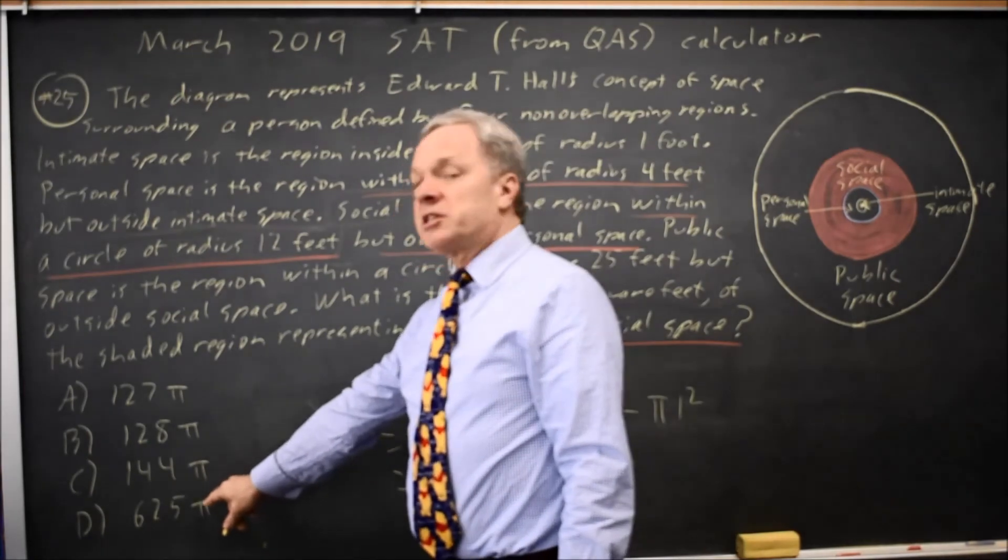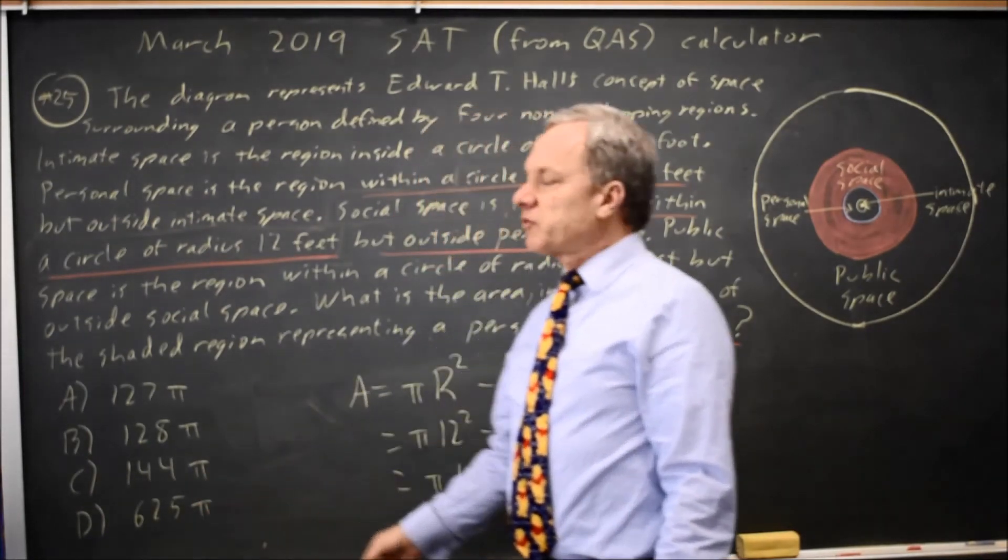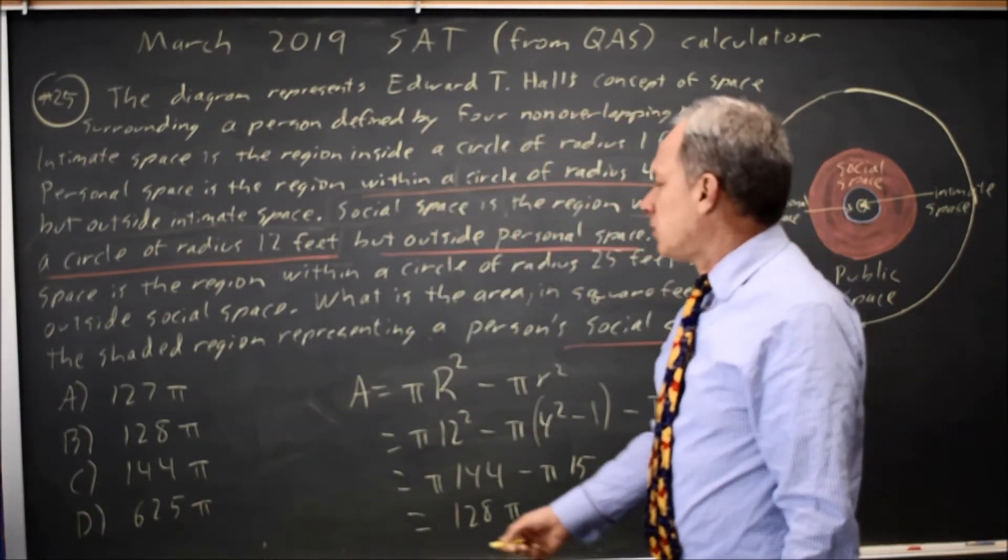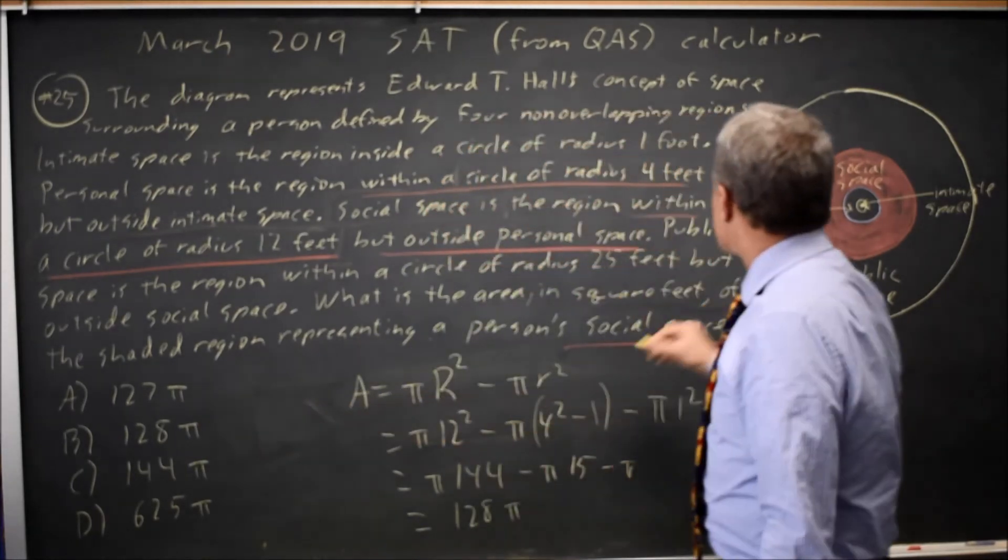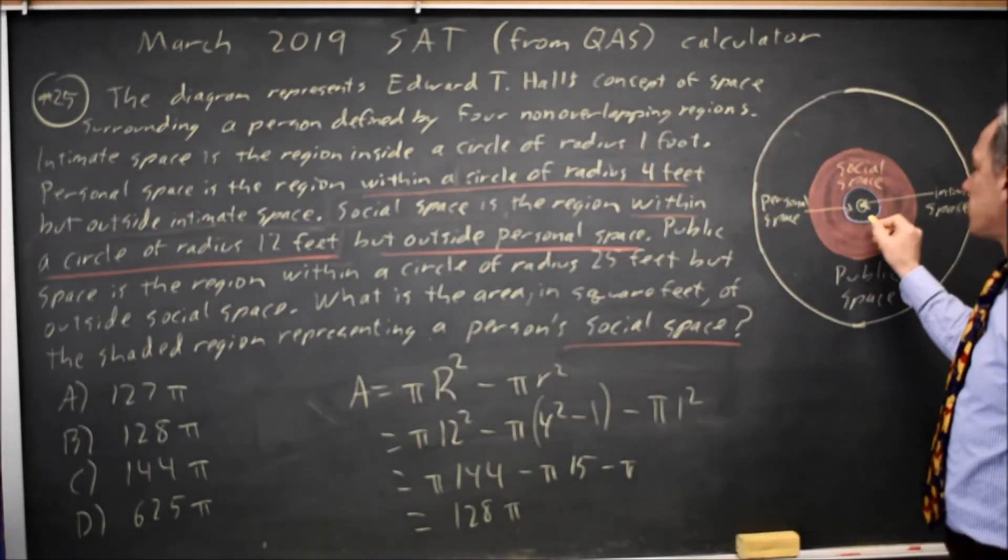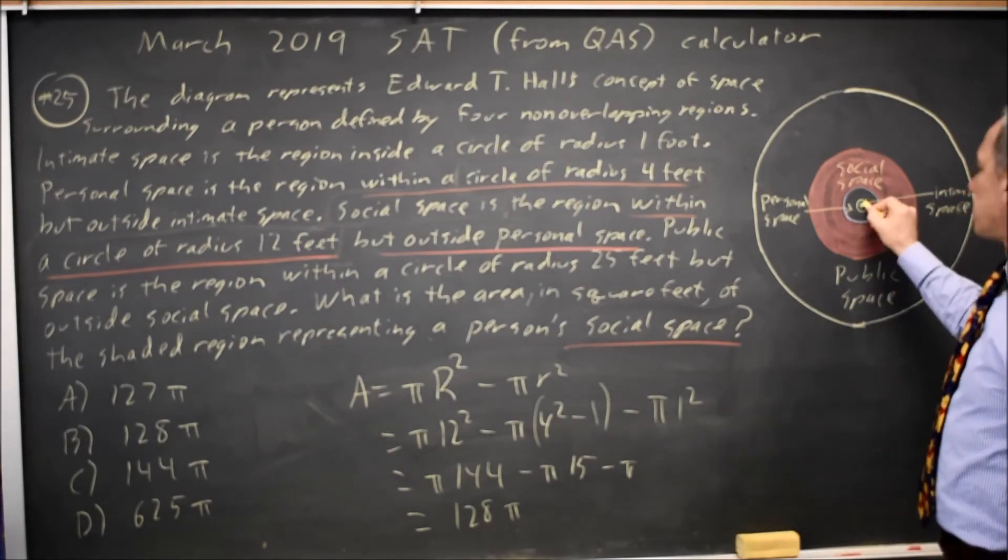625 comes from the entire area of the different types of space in the diagram. 144 is everything inside the radius of 12, including personal and intimate along with social.